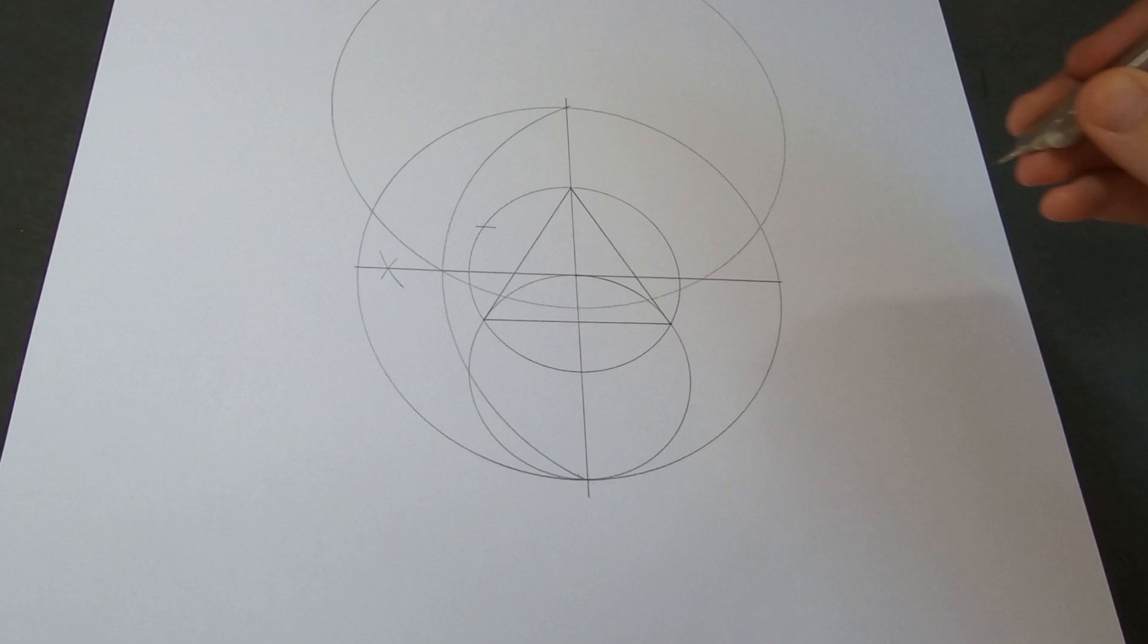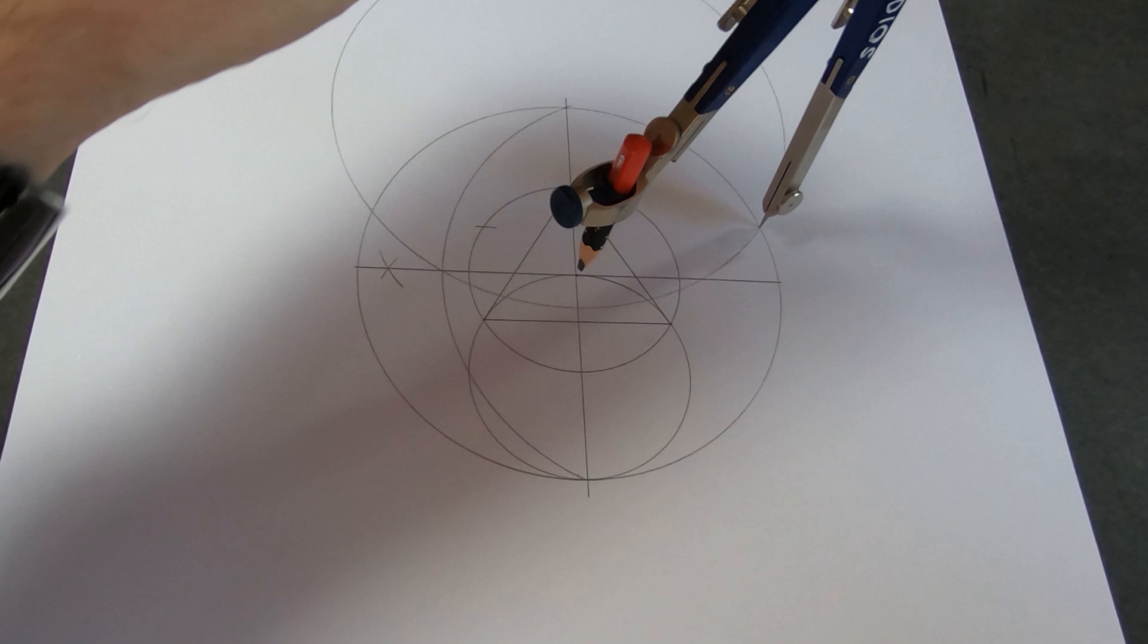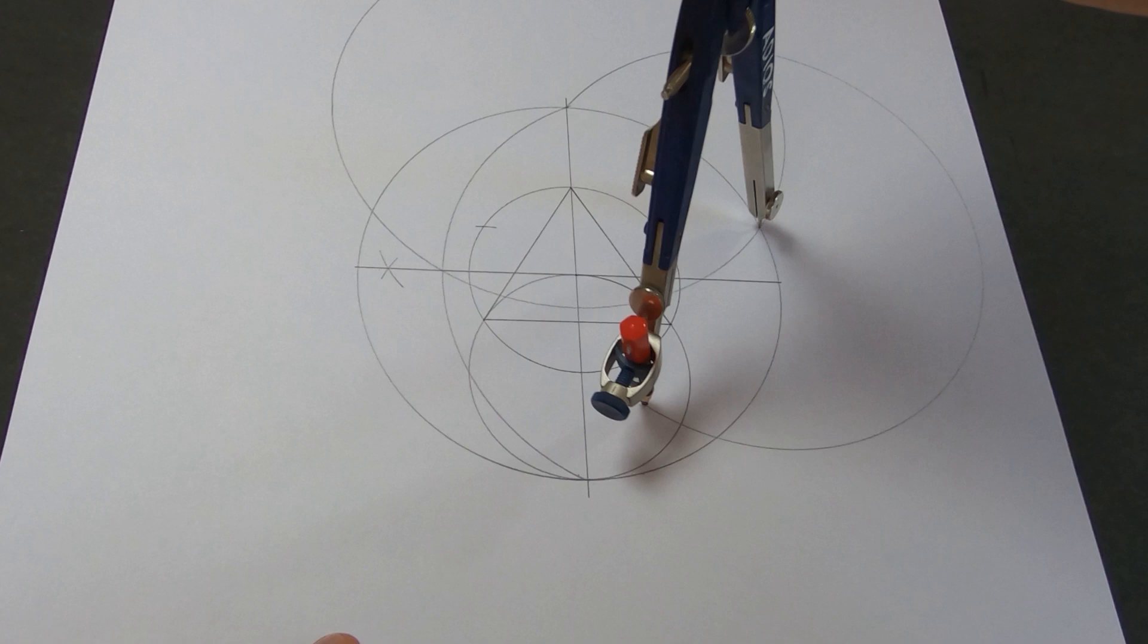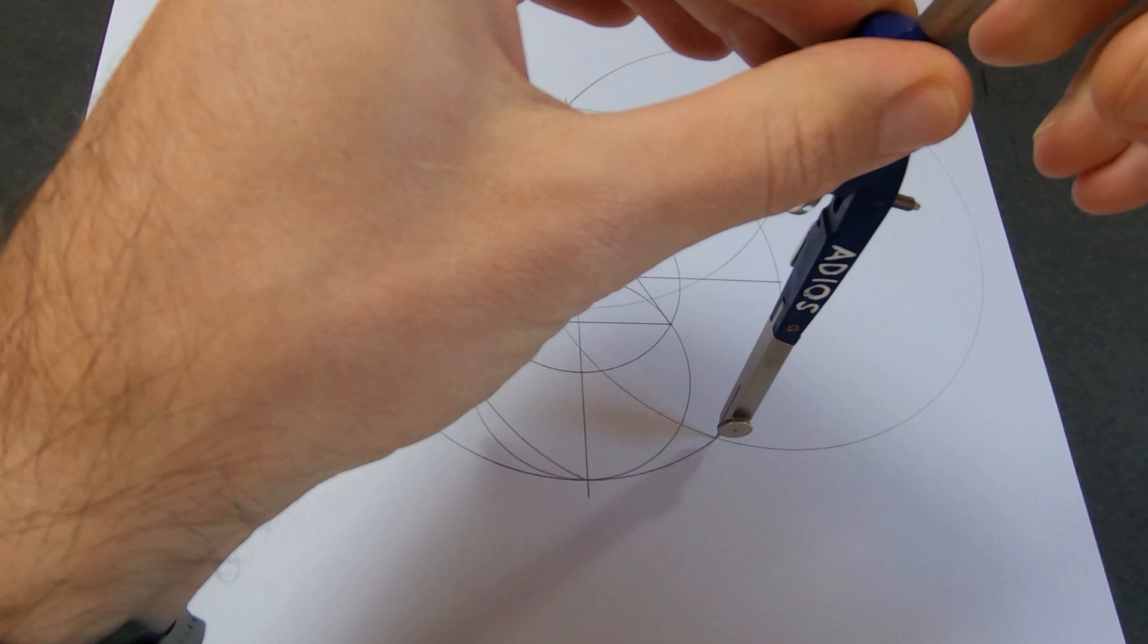And the point where that circle crosses the other circle is where we're going to put the compass point and draw another circle. And we'll repeat that step all the way around the circle until we end up back in the same place. And then we'll have 5 circles.